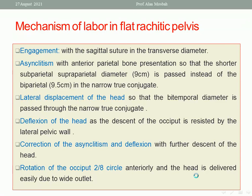The mechanism of labor in flat rachitic pelvis involves: engagement with the sagittal suture in the transverse diameter, as this is the longer diameter of the pelvis at the inlet. Then asynclitism with anterior parietal bone presentation, so that the shorter subparieto-supraparietal diameter of 9 cm passes instead of the biparietal diameter of 9.5 cm through the narrow true conjugate. Lateral displacement of the head allows the bitemporal diameter to pass through the narrow true conjugate. Deflection of the head occurs as the occiput's descent is resisted by the lateral pelvic wall, followed by correction of asynclitism and deflection with the forces of descent. Finally, the occiput rotates anteriorly and the head is delivered easily due to the wide outlet.